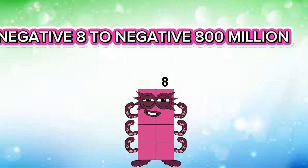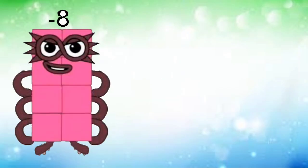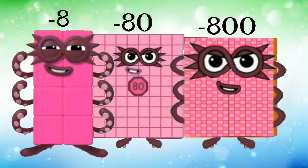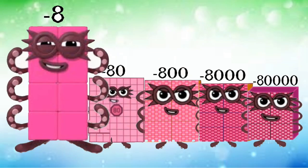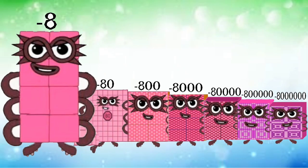Negative eight to negative eight hundred million. Negative eight. Negative 80. Negative 800. Negative 8,000. Negative 80,000. Negative 800,000. Negative 8 million.